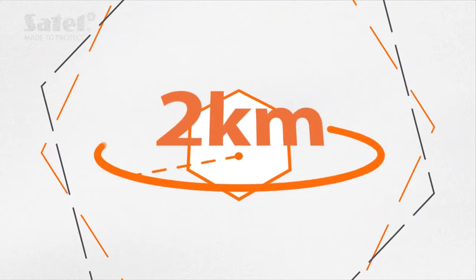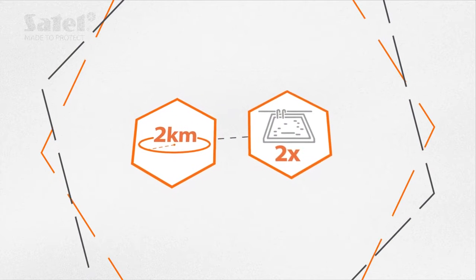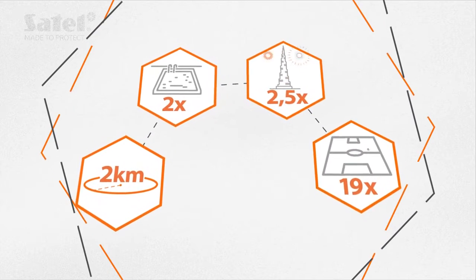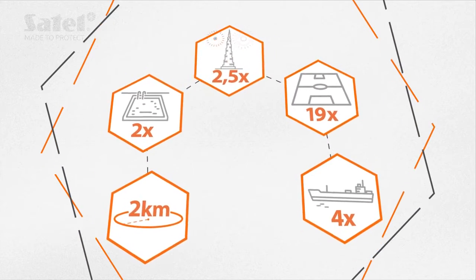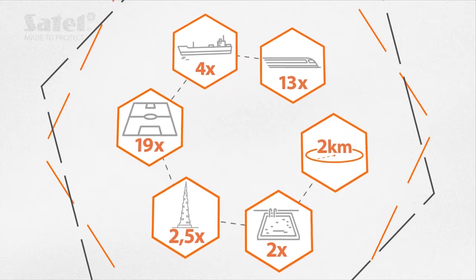ABAX2 has a range of up to 2 km in the open area. It is almost twice the longest swimming pool, 2.5 times the height of Burj Khalifa skyscraper, 19 football fields, 4 lengths of the longest ship in history, and 13 of the currently fastest maglev trains.